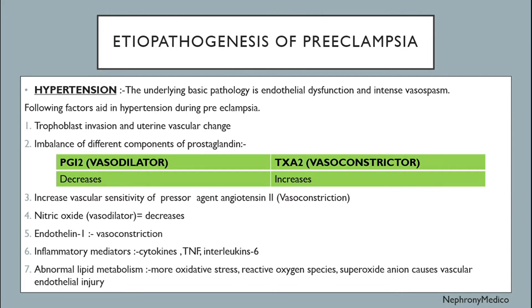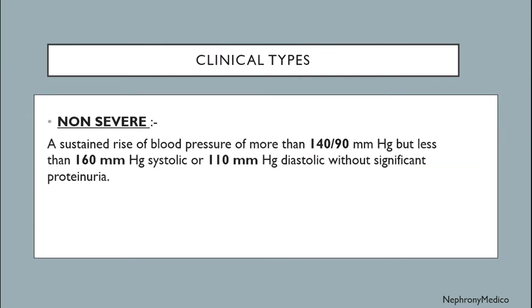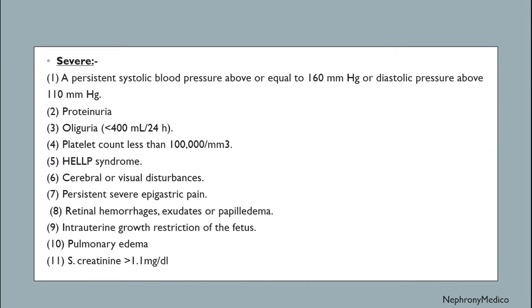Clinical types: Non-severe — a sustained rise of blood pressure of more than 140 over 90 mmHg but less than 160 mmHg systolic or 110 mmHg diastolic, without significant proteinuria. Severe — a persistent systolic blood pressure above or equal to 160 mmHg or diastolic pressure above 110 mmHg.